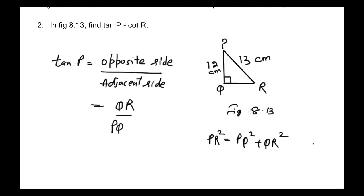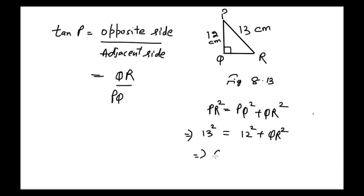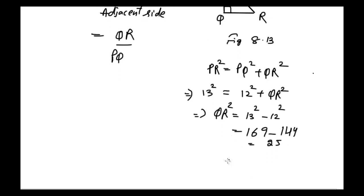So PR² is 13², and PQ² is 12² plus QR². So we get QR² = 13² - 12². And 13² is 169, and 12² is 144, which equals 25. So we get QR² = 25. Square rooting both sides, we get QR = 5.